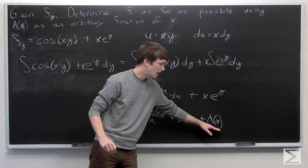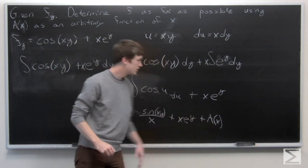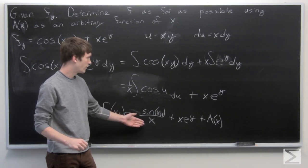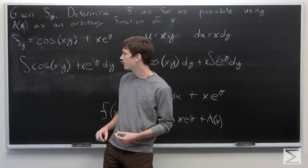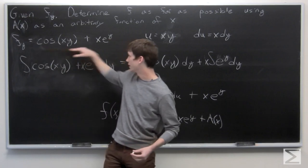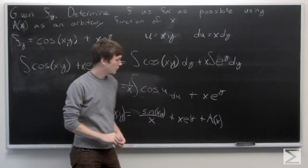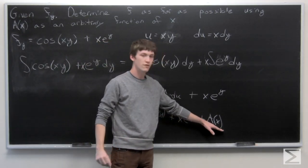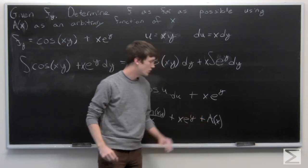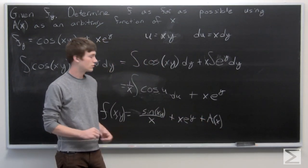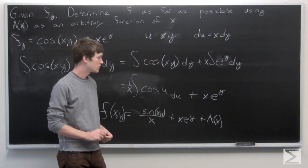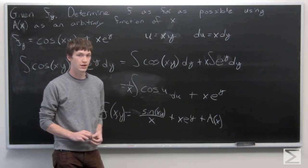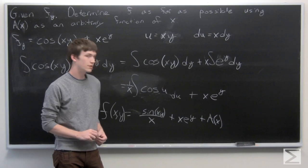The last step is to substitute u back in. So we have f equals sine(xy) over x plus x·e to the y plus a(x). The a(x) is included because when we take the partial derivative of f with respect to y, we want to recover the original equation. When we take the partial derivative of a(x) with respect to y, it's just a constant term, so it goes to zero. This is our function f as far as we can determine.